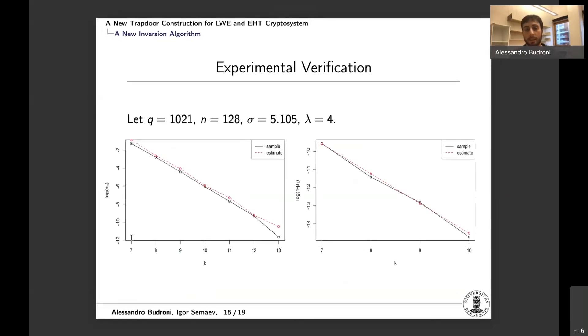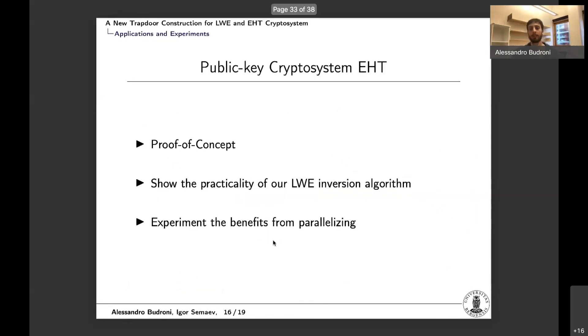So we verified experimentally these two formulas. Essentially we run a lot of decryptions and then we counted how many times we encountered one or the other kind of failures. And then we can see from this plot that the theoretical estimates that is in red fits well the experimental results. This is a black line.